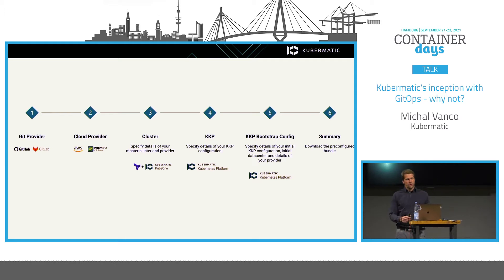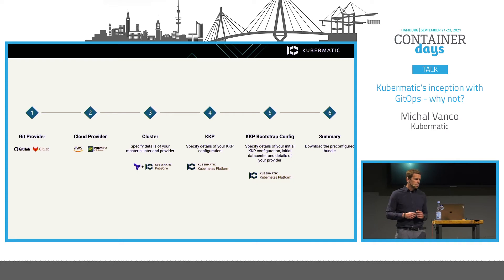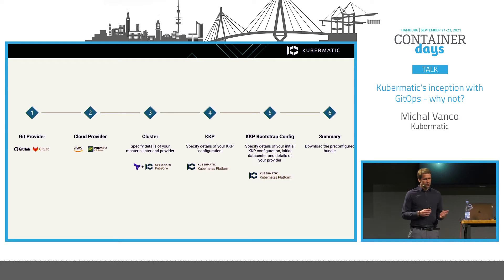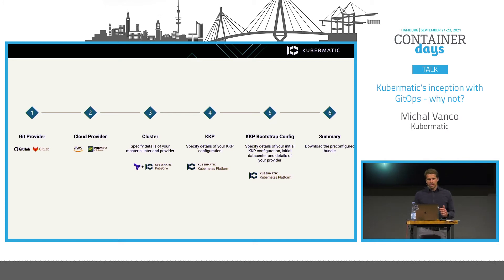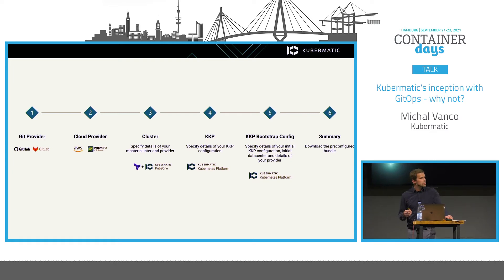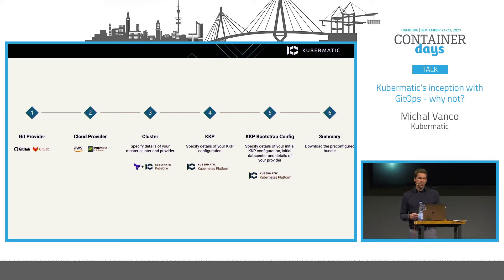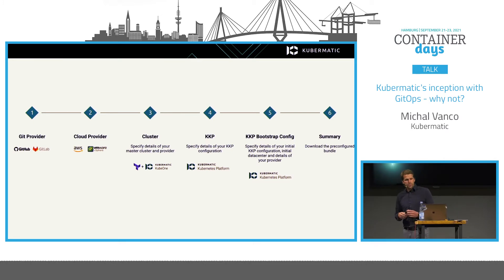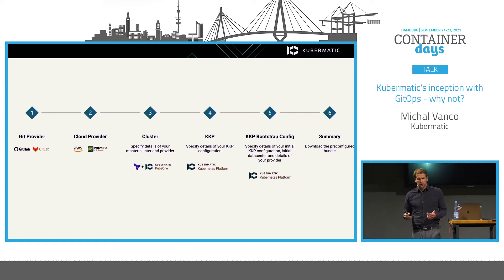In the next step you decide what cloud environment the Kubernetes platform will be installed on. At this point AWS and vSphere are supported — a combination of public cloud and on-premise. The next steps get more interesting: you provide inputs for how you want to build your Kubernetes cluster and set up KKP. In step three you specify the Kubernetes version and container engine.